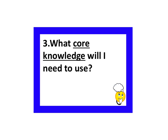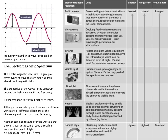For core knowledge, it's all in the knowledge organizer sheet — you don't need to have memorized it. Radio waves have the lowest energy and longest wavelength. Gamma rays have the highest energy and shortest wavelength. A common feature is that all electromagnetic waves travel through a vacuum at the speed of light.